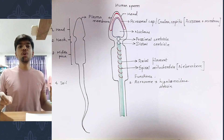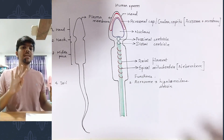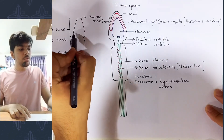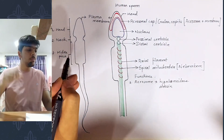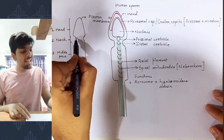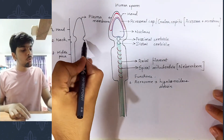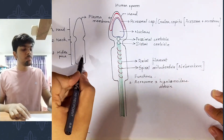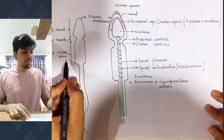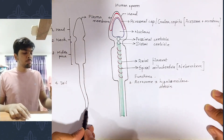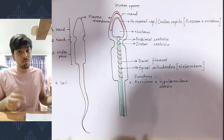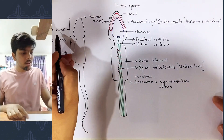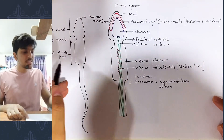A typical human sperm is divisible into four major parts. There's the head of the sperm, which looks like the head of a spear. There's the neck of the sperm, which is narrow and connects the head with the middle piece. And finally, the structure which looks like a tail, called the tail. So the four major parts are head, neck, middle piece, and tail.